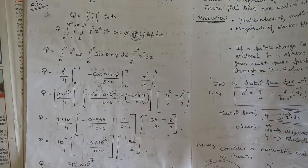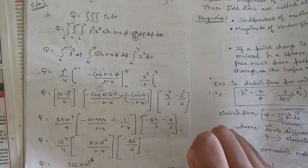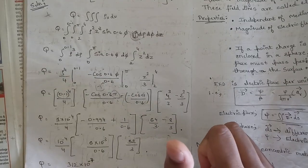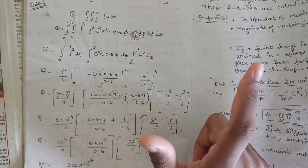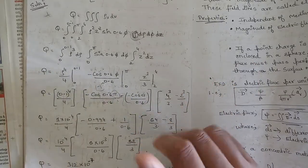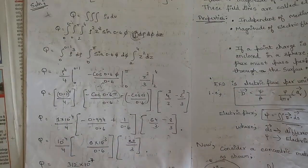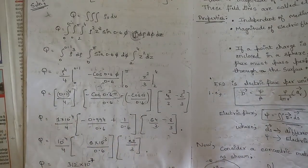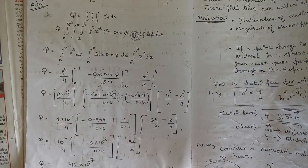So those were the problems from module 1: one from Coulomb's force of attraction to find the force exerted by point charges, one from electric field intensity, and one from charge distribution — finding the value of charge Q. These are the important numerical problems which might appear from module 1.